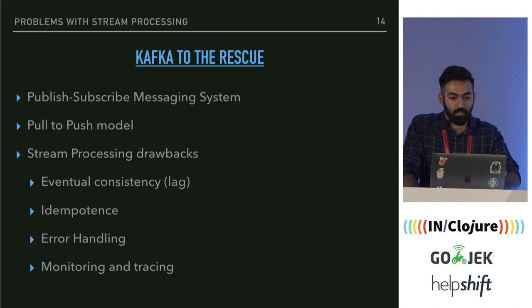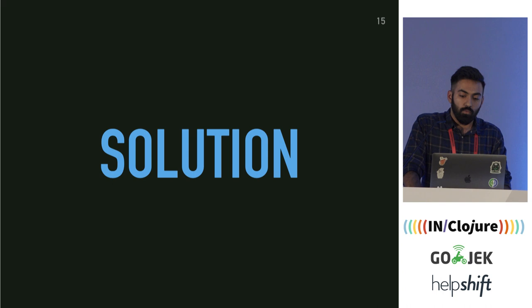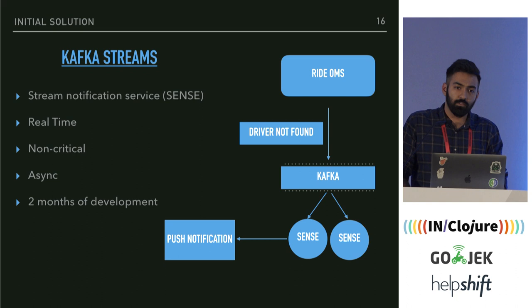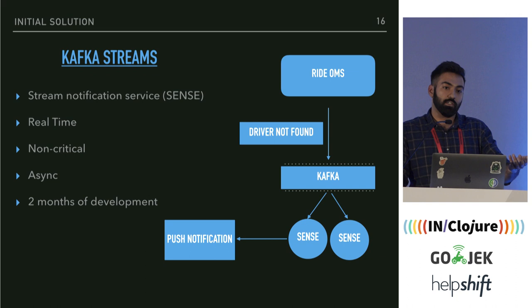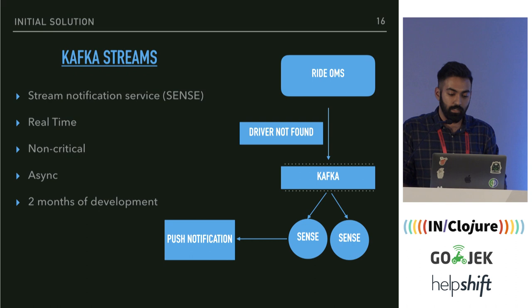The problem was that stream processing was not happening in the company and we wanted it to happen. Our initial stab at a solution was using Kafka Streams, which gives you a really good DSL to read streams from Kafka and process them using a topology — a logical representation of data processing in a pipeline.